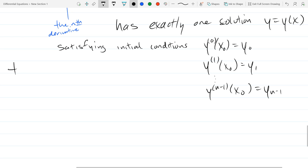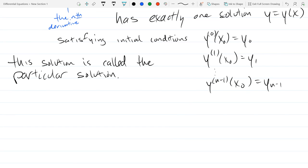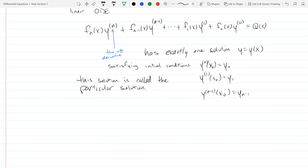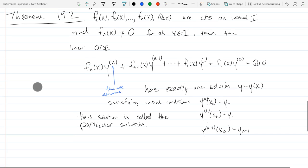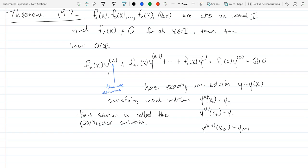So this has exactly one solution with these initial conditions. And this solution is called the particular solution. So the solution is called the particular solution. This big theorem, all right. This theorem by the way doesn't tell you how to solve it at all. It just says there's going to be a solution. So in some sense it's very unhelpful. So this is what they call an existence theorem, not a constructive theorem.